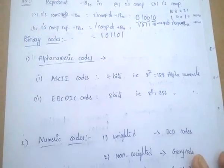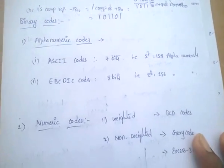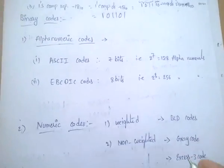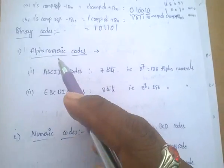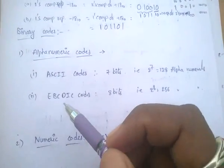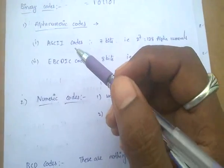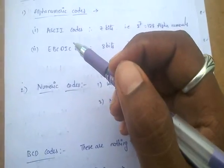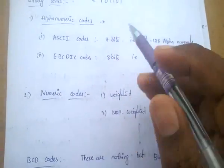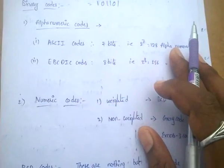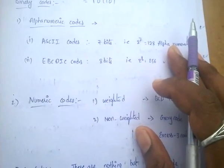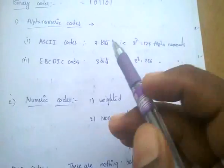Next one: binary codes. The binary codes are mainly two types: alphanumeric codes and numeric codes.